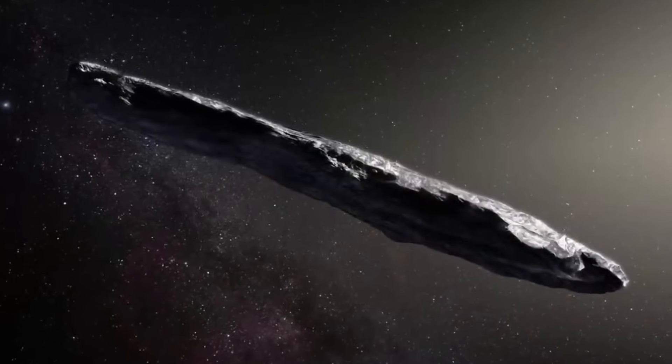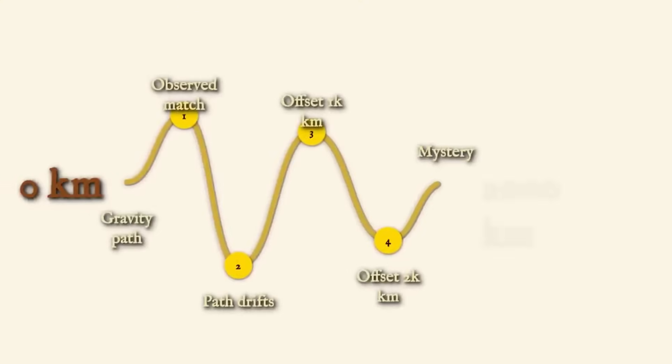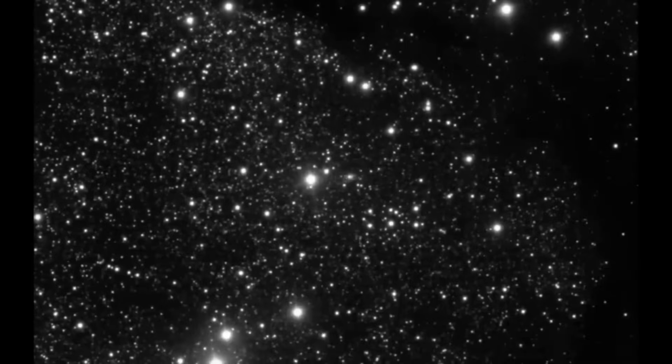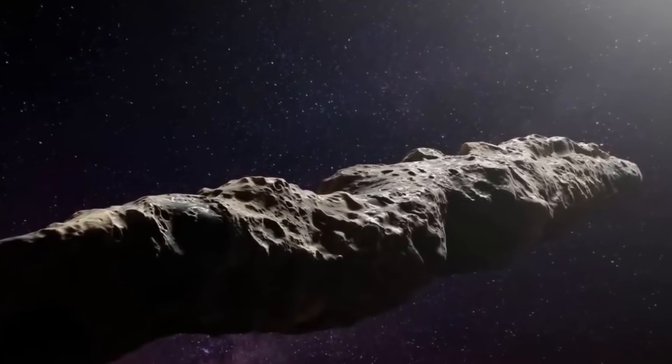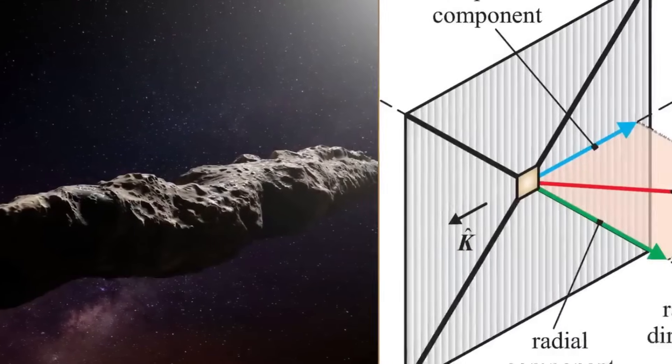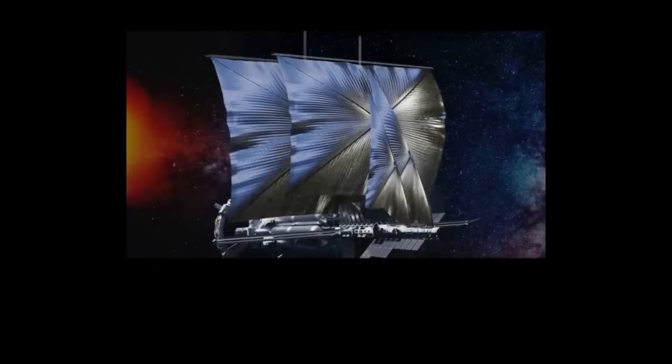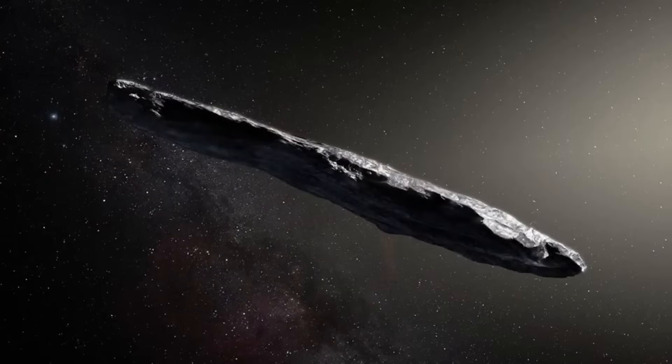But the mystery deepened even further when scientists tried to predict exactly where 3I/Atlas would be at any given time. Predicting the path of objects in space is usually straightforward math. You know the object's mass, you know how fast it's moving, you know the gravitational pull from the sun and planets, and you can calculate exactly where it should be. It's the same kind of math that lets us land spacecraft on Mars or send probes to distant planets. For 3I/Atlas though, the math wasn't working out.